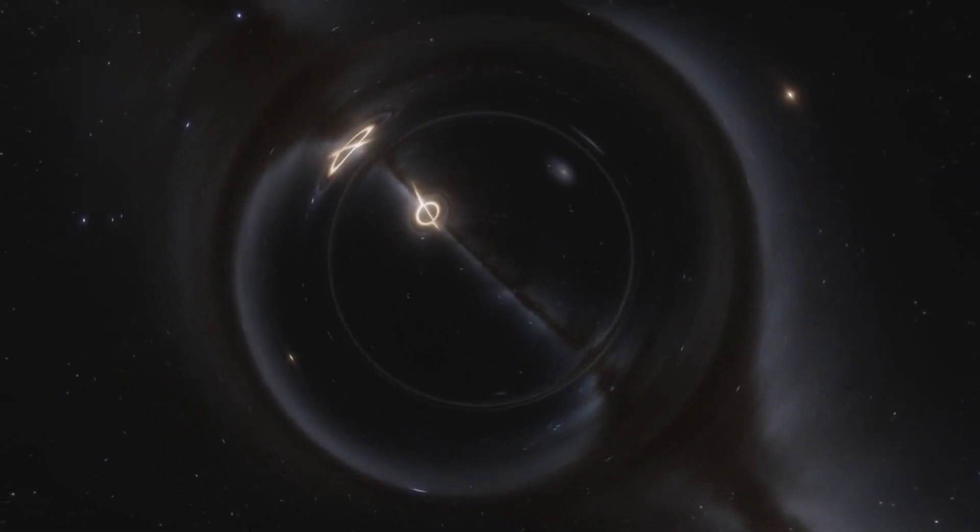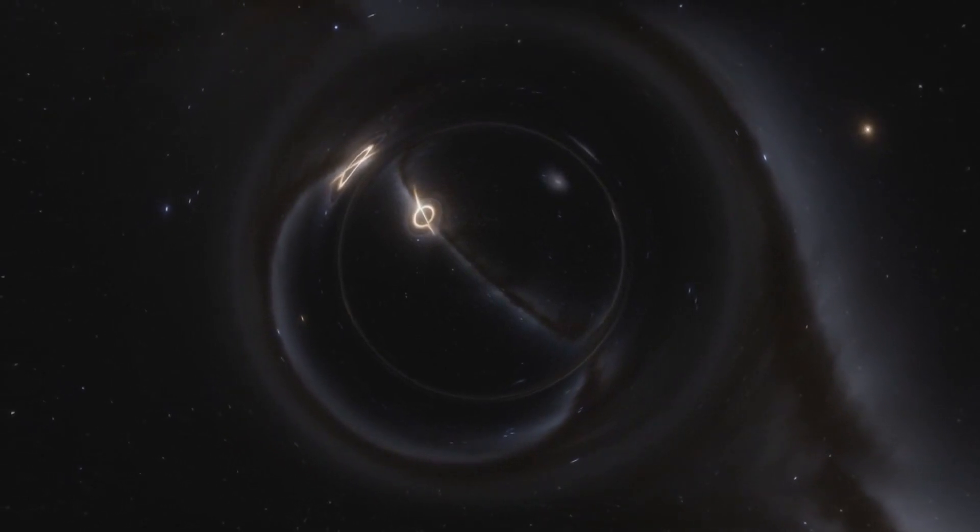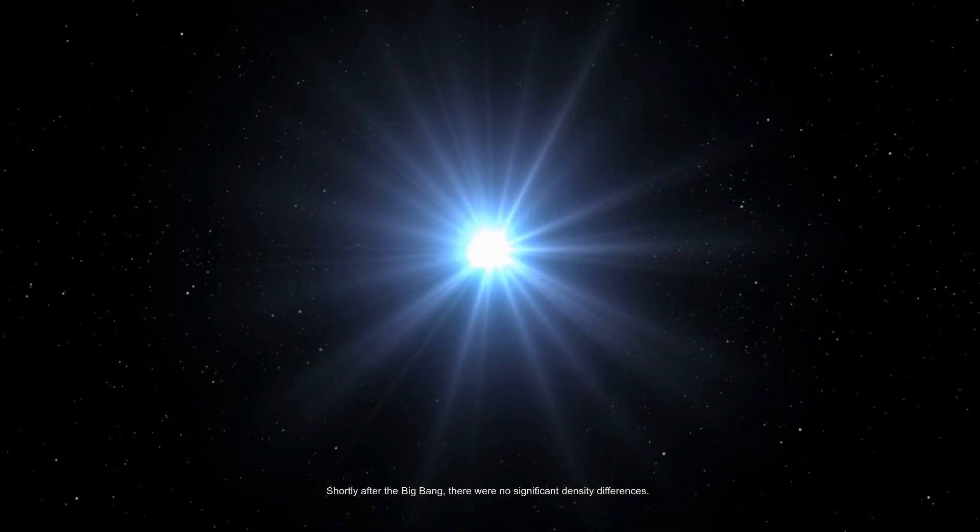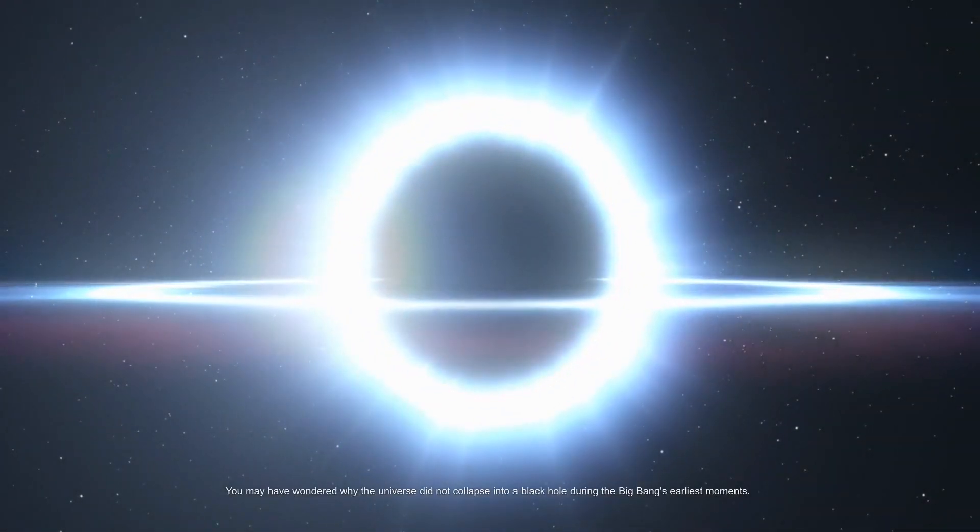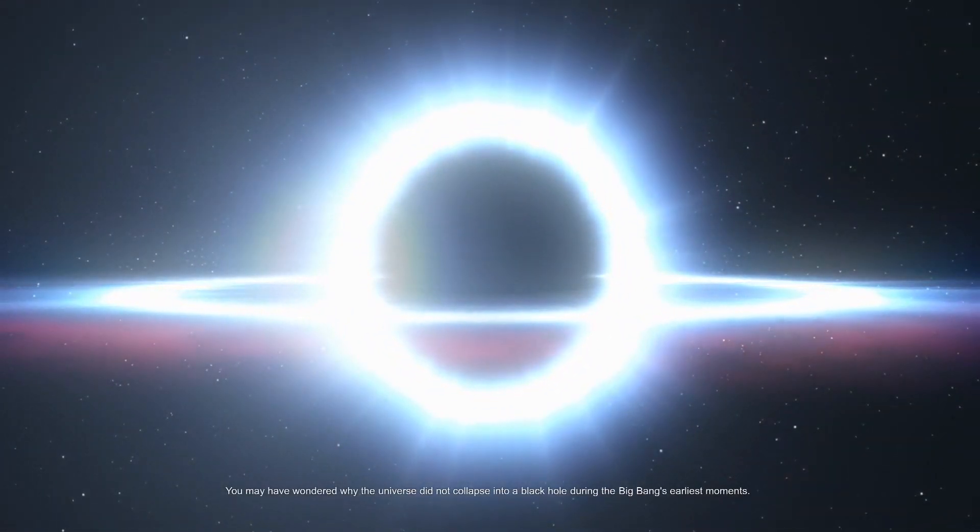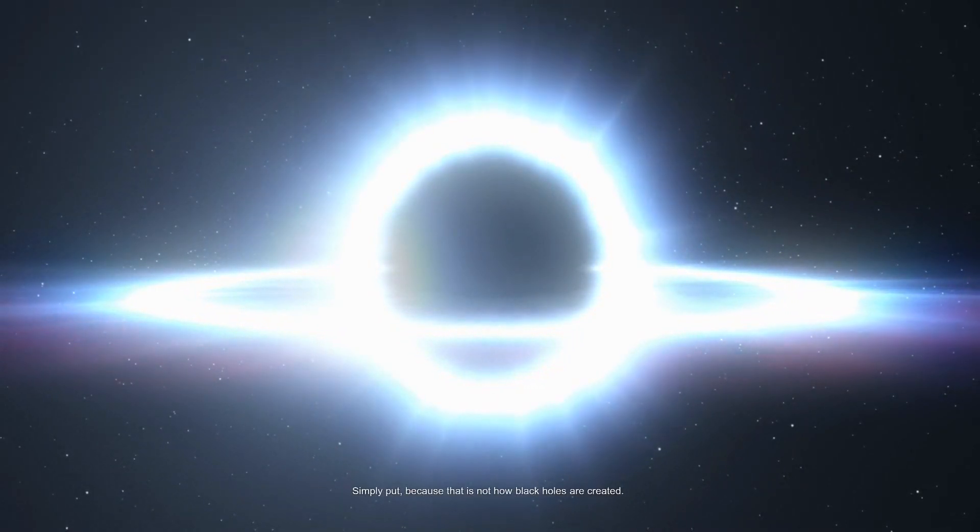Why didn't the early universe collapse into a black hole? Shortly after the big bang, there were no significant density differences. You may have wondered why the universe did not collapse into a black hole during the big bang's earliest moments. Simply put, because that is not how black holes are created.